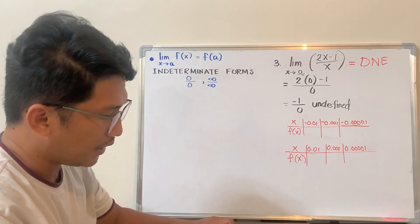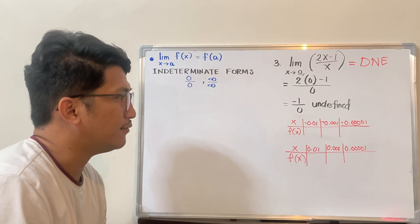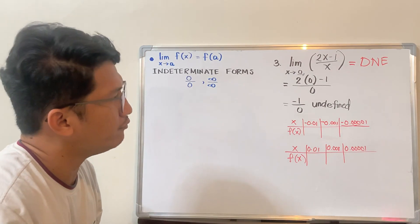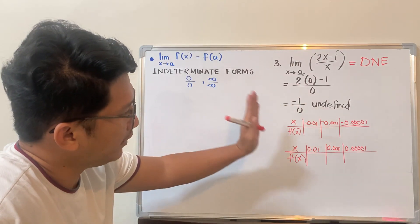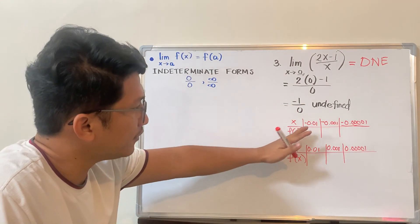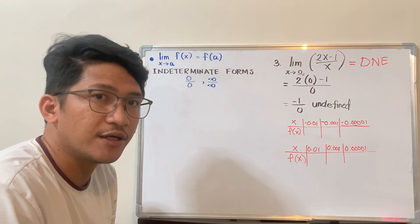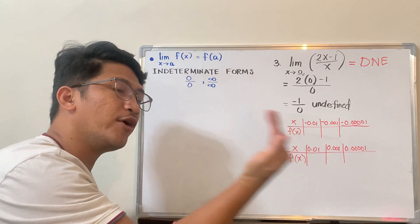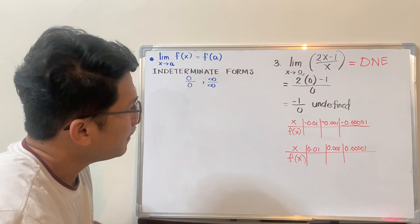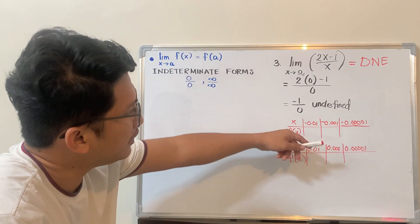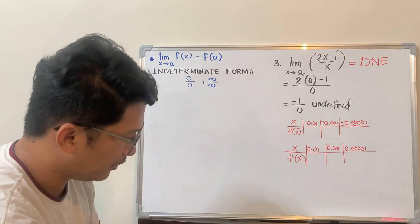Actually, I'm not always using table of values since I'm already good enough in solving limits. But if you're not yet confident, you can start from negative 1, negative 0.5, and closer. On the right side, start from positive 1, then 0.5, 0.01, and so on. From here, we use these values and substitute to the function. The function is (2x - 1) / x — substitute the values.